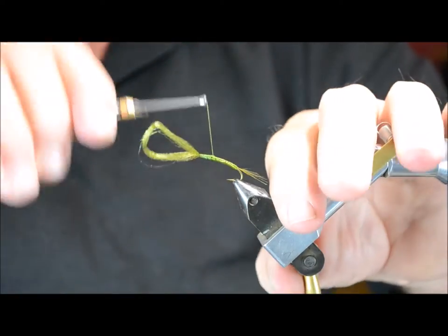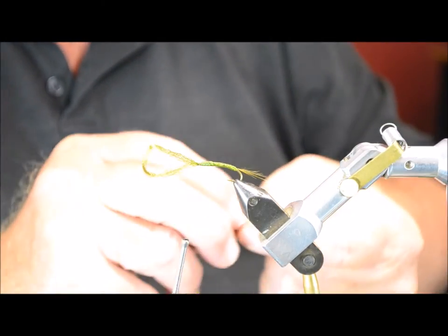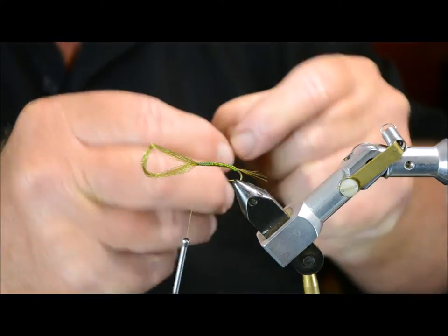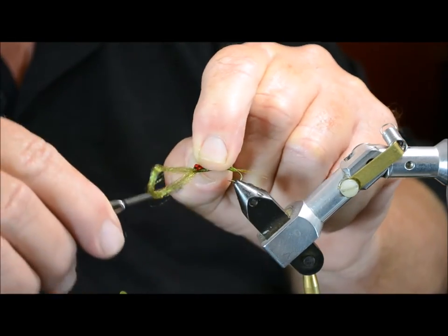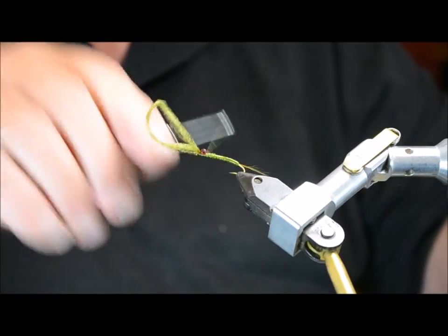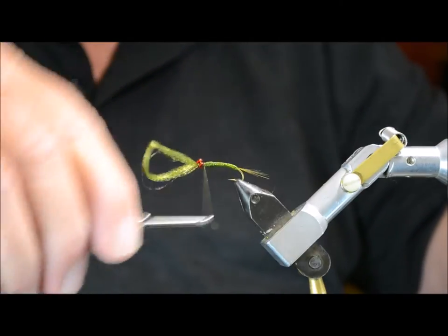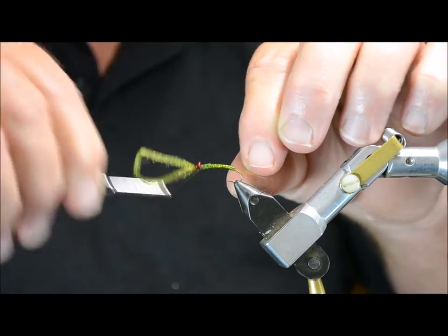Now we're going to do a little fiddle thing. We're going to tie in a little red eye. Here's one that you can buy. You can also make them yourselves.